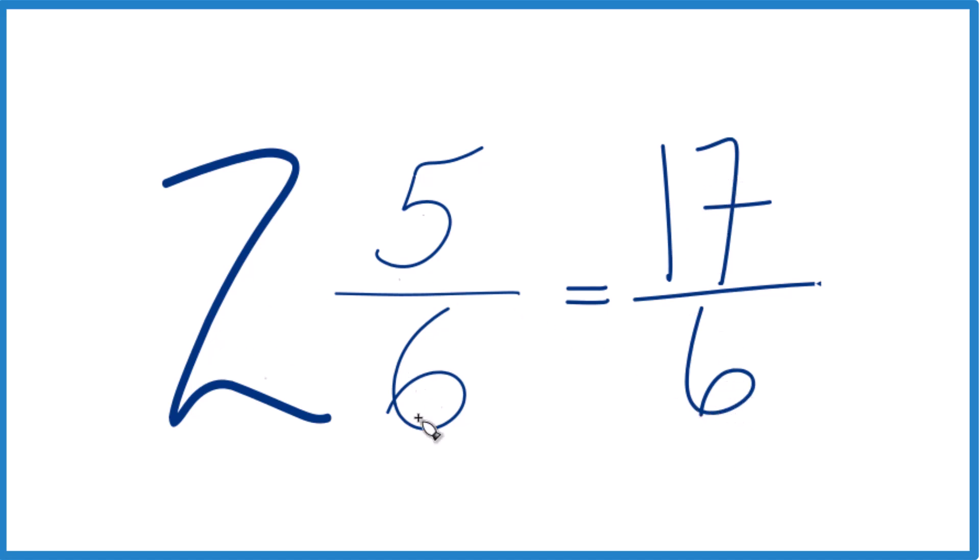And let's do that one more time. 2 times 6 is 12. 12 plus 5, that's 17. That's the numerator. Bring the denominator across, and you've got 17/6.